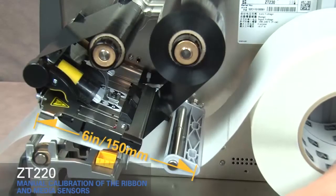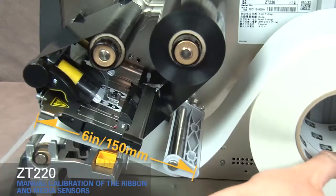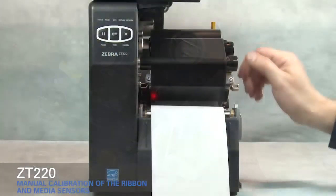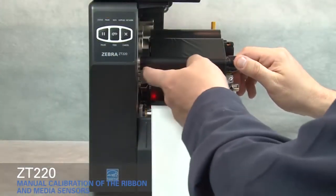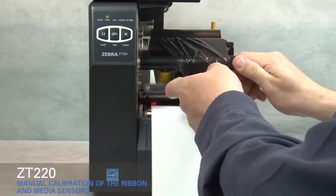Roll media back into the printer so that only the backing is between the media sensors. Move ribbon to the right away from the sensors. Close the printhead.